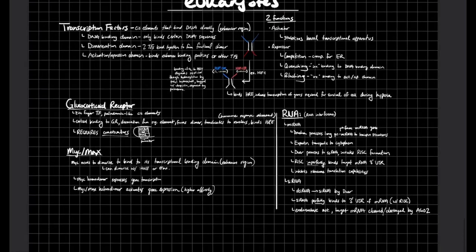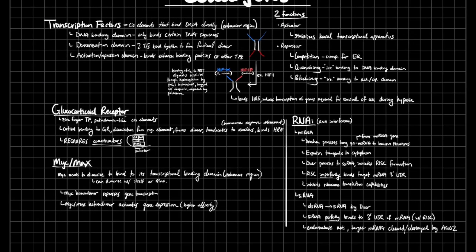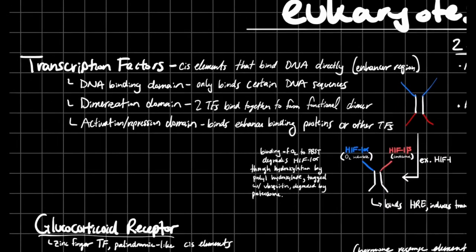In this video, I wanted to touch on eukaryotic gene regulation, and this is done primarily through transcription factors. I'll also give you some examples, just like I did for the lac operon. So for transcription factors, these are going to be cis elements that bind to the DNA directly, and specifically in the enhancer region.